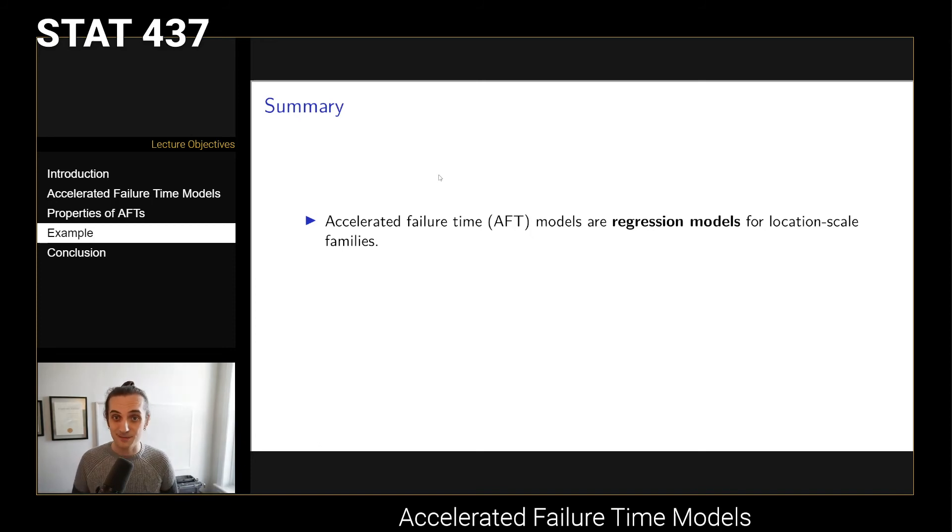That's essentially everything for accelerated failure time models. I know it was fairly brief, but that's because we've spent so much time building to this point. Those regression models that I've been talking about with the log linear models, those are just accelerated failure time models. When you see AFTs out in the literature, it's a regression model where you've taken the log transform of your survival time, and you've said that's going to follow a location scale distribution. That linear predictor is multiplicatively scaling the survival time.